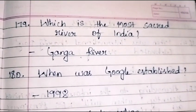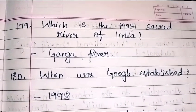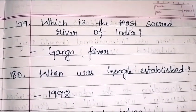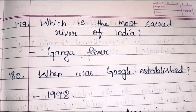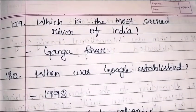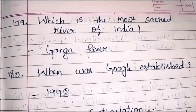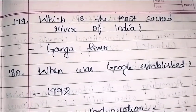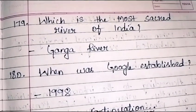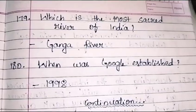Which is the most sacred river of India? It is the Ganga River. When was Google established? In 1998. I will continue in the next video.